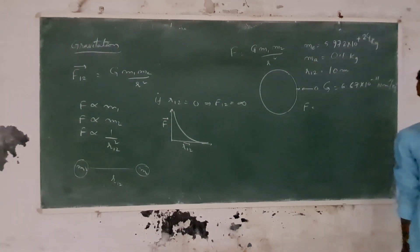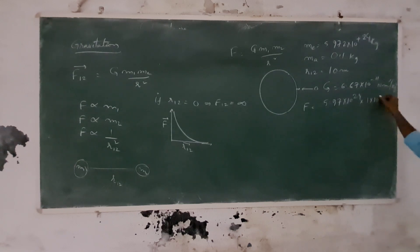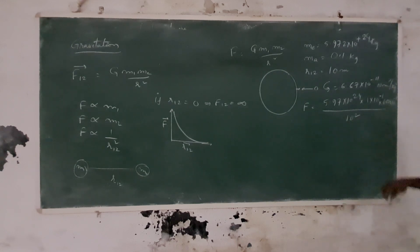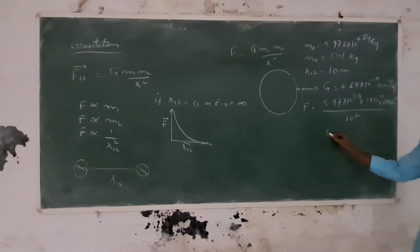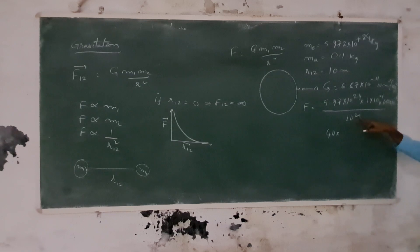So if we substitute the numbers: force equals G times M1 times M2 divided by R squared. M1 is 5.97 times 10 to the power 24, M2 is 0.1 times 10 to the power minus 1, G value is 6.67 times 10 to the power minus 11, and R is 10 squared.